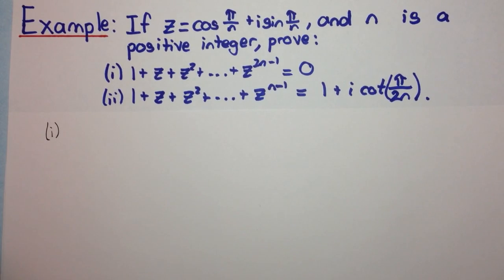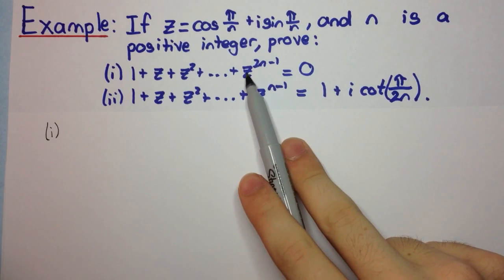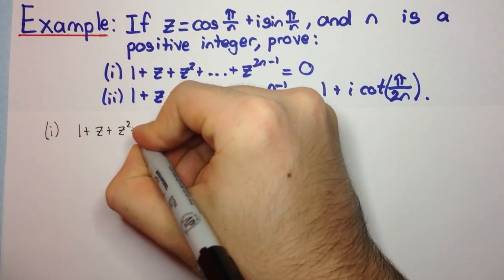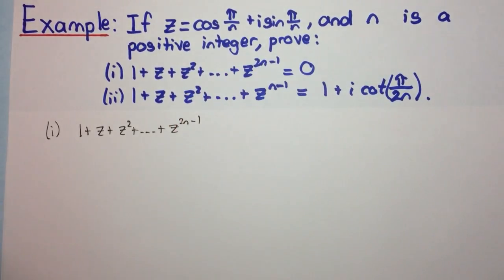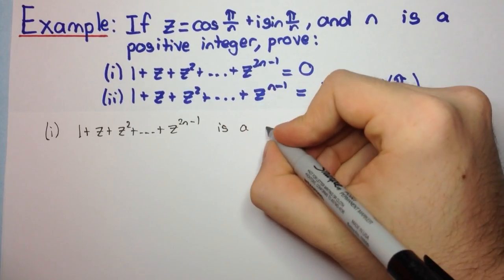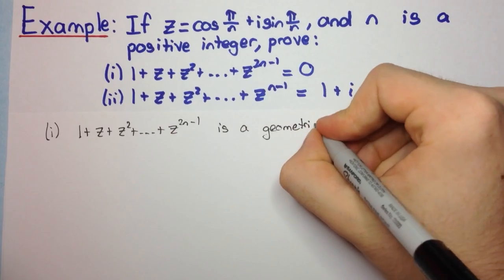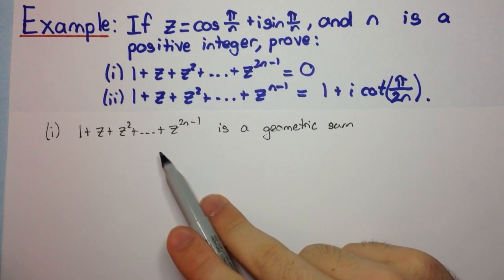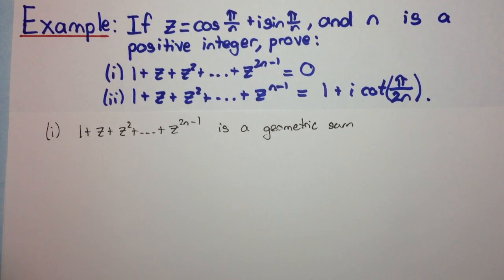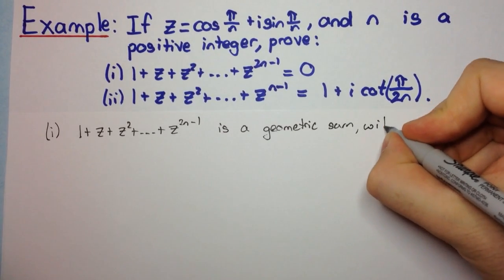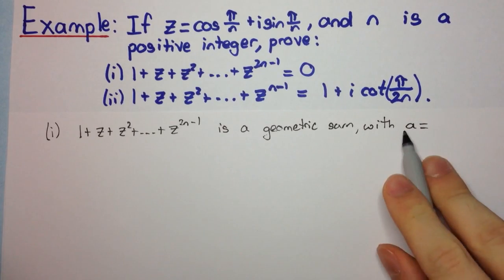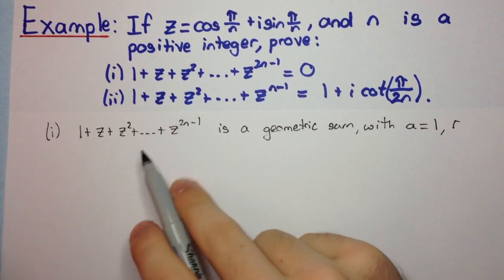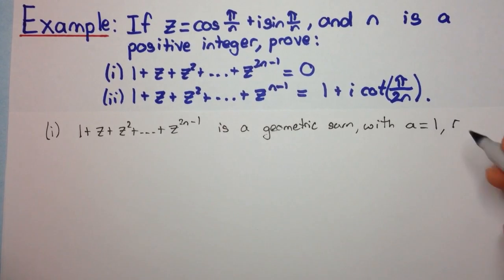The main trick in this question is to recognize that 1 + z + z² + ... + z^(2n−1) is a geometric sum — not a geometric progression, because we're adding up all the terms with plus signs. So it's a geometric sum with first term a = 1, and ratio r = z, since each term is z times more than the one before it.